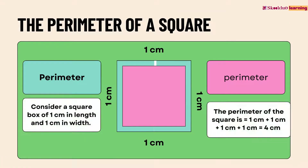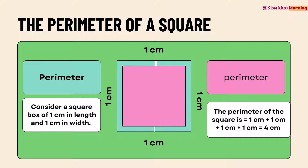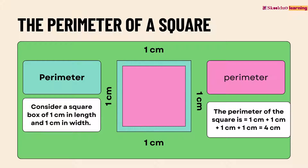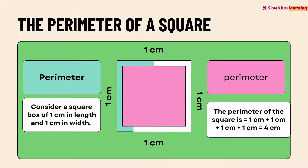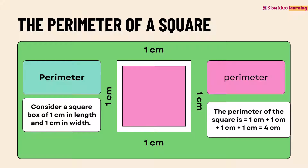Consider a square box of 1 cm in length and 1 cm in width. The perimeter of the square is 1 cm plus 1 cm plus 1 cm plus 1 cm, which is equal to 4 cm.